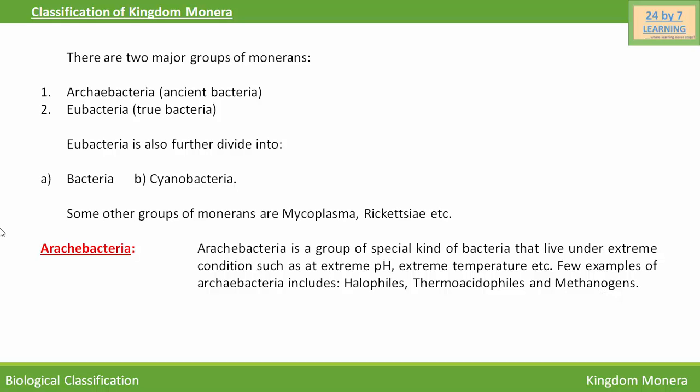Halophils are those Archibacteria that live in habitats having high salinity and high light intensity. Thermoacidophils live in hot sulfur springs, and Methanogens are found in the guts of many ruminants like cows and buffaloes. They are able to produce methane gas from dung, so Methanogens are used for the production of biogas.